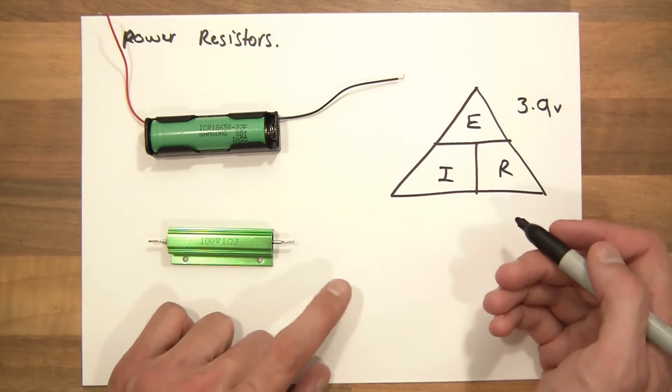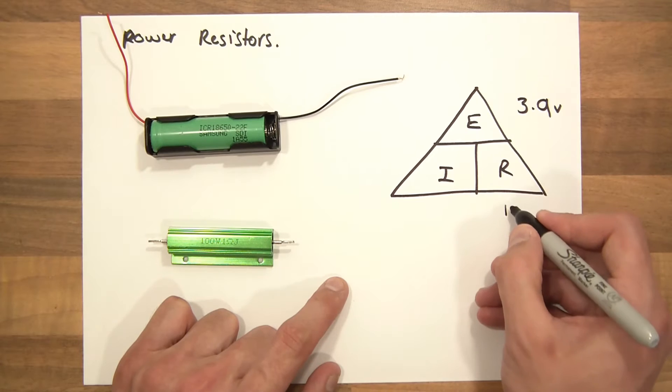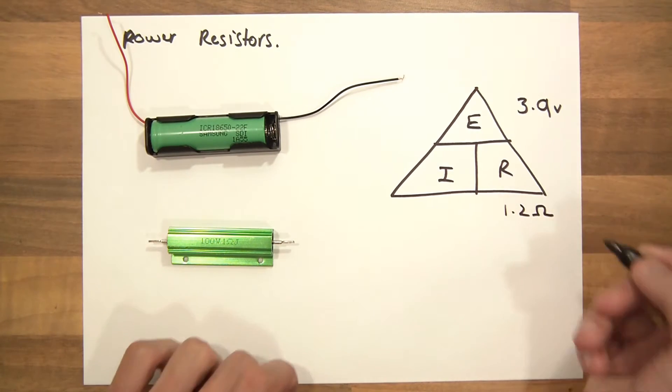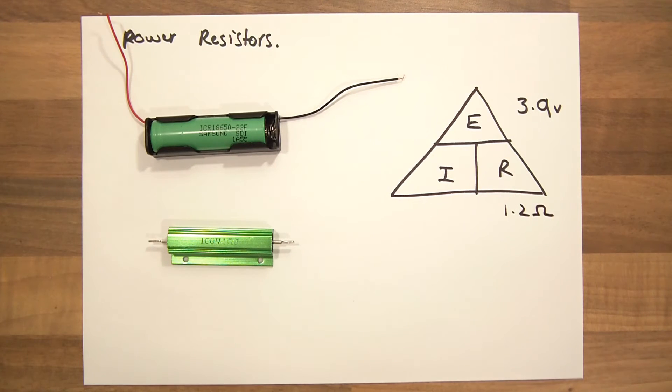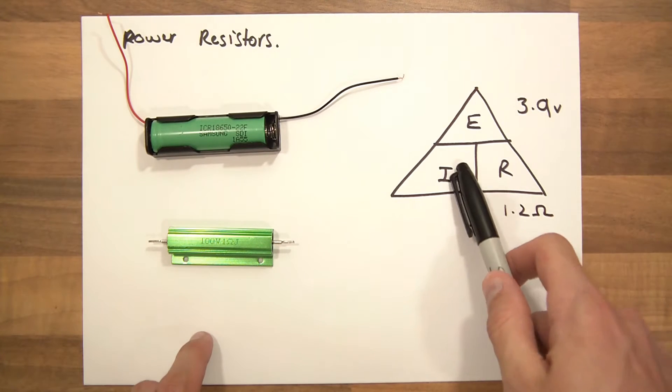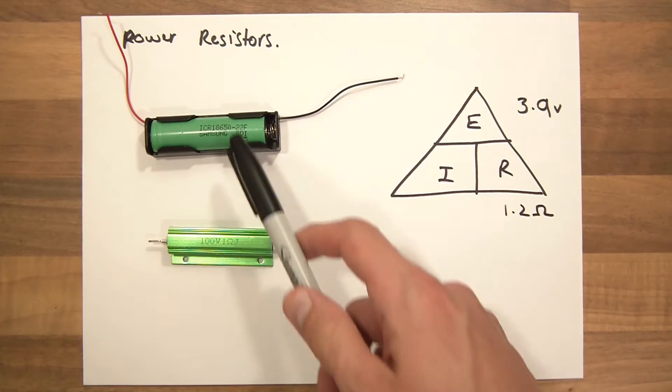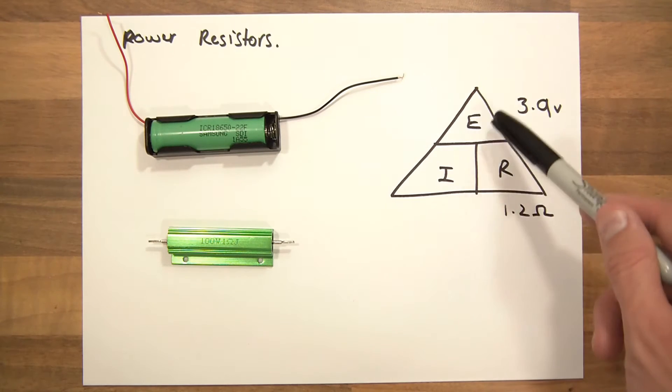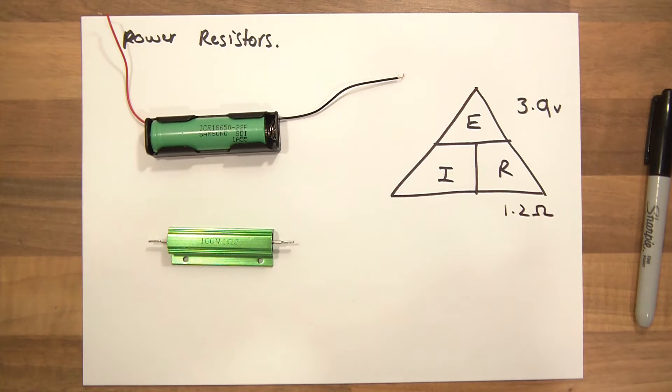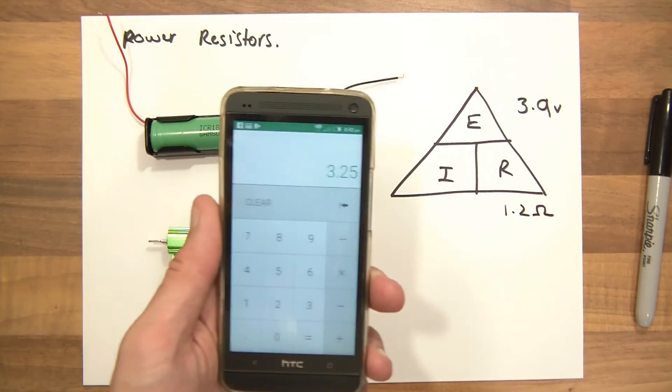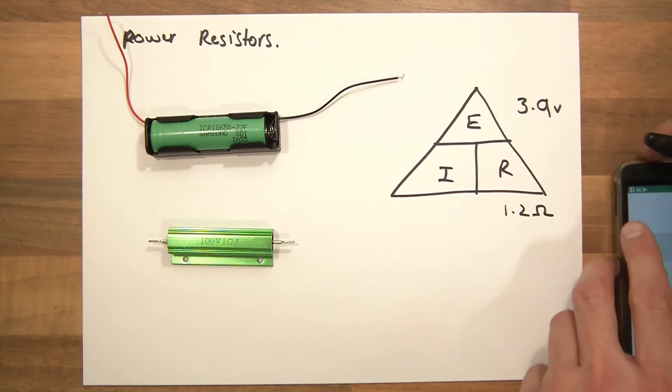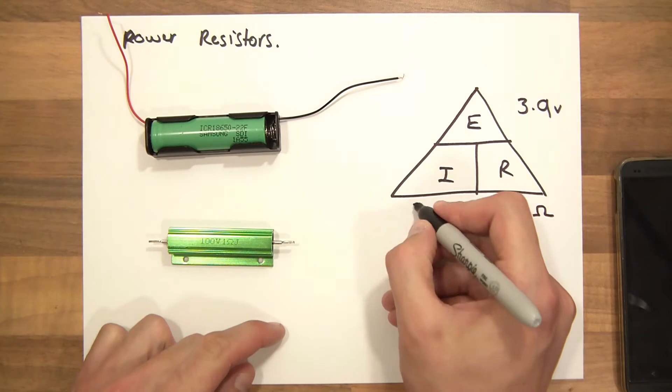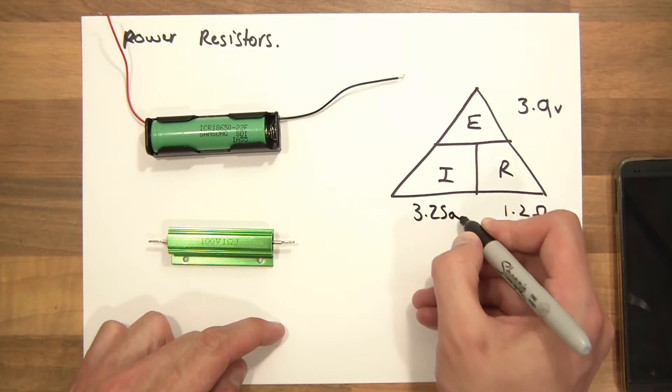Now R, we know R, it's 1.2 ohms. So 3.9 volts, 1.2 ohms. And we could do with finding out the current. And that's easy, we can do that. Because we know the voltage and because we know the resistance of the circuit, we can find out the current. So if we get the voltage and divide that by the resistance, so 3.9 divided by 1.2, 3.25. So 3.25 amps.